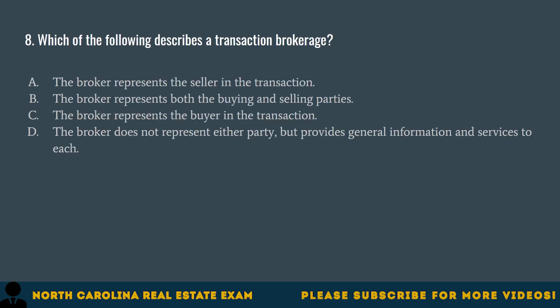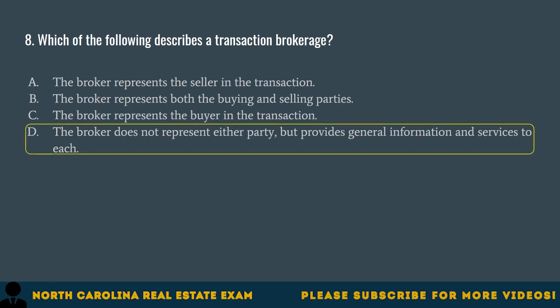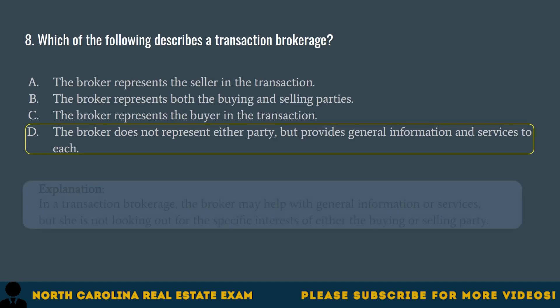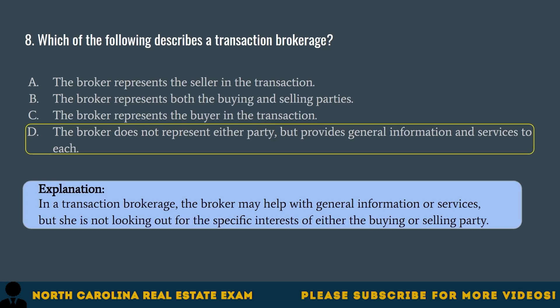Question 8. Which of the following describes a transaction brokerage? A. The broker represents the seller in the transaction. B. The broker represents both the buying and selling parties. C. The broker represents the buyer in the transaction. D. The broker does not represent either party, but provides general information and services to each. The correct answer is D. In a transaction brokerage, the broker may help with general information or services, but she is not looking out for the specific interest of either the buying or selling party.